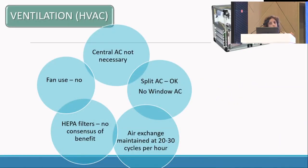Coming to ventilation, AIOS has not given a straightforward recommendation that we must have a HEPA filter because there is still no consensus on it. But it is certain that we cannot have a fan or a window AC. We can have a split AC where the AC filters need to be cleaned weekly and an engineer should service it once a month. Air exchange should be done for those who can have the air handling unit — this is an added advantage.